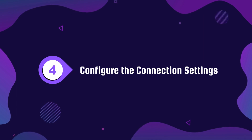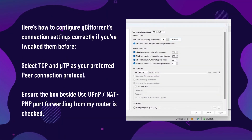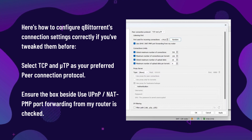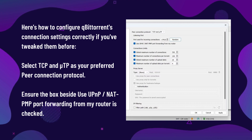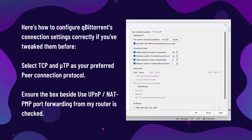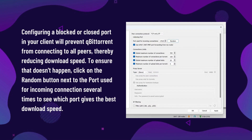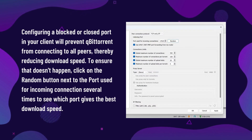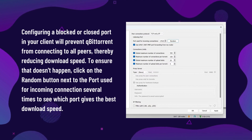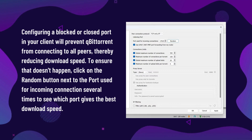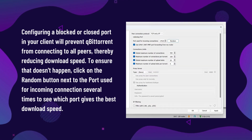Step number four: configure the connection settings. Here's how to configure qBittorrent's connection settings correctly if you've tweaked them before. Select TCP and uTP as your preferred peer connection protocol. Ensure the box beside 'Use UPnP/NAT-PMP port forwarding from my router' is checked. Configuring a blocked or closed port will prevent qBittorrent from connecting to all peers, reducing download speed. To prevent this, click the random button next to the port used for incoming connections several times to find which port gives the best download speed.